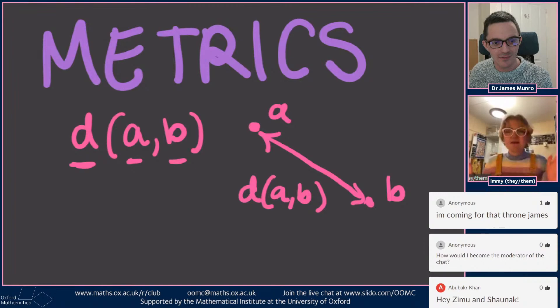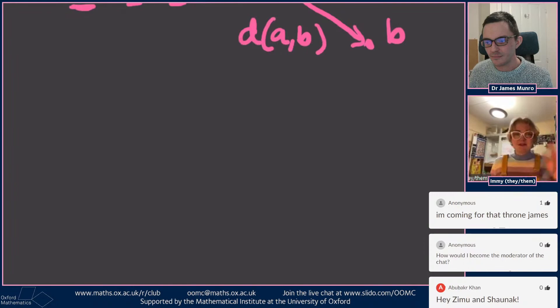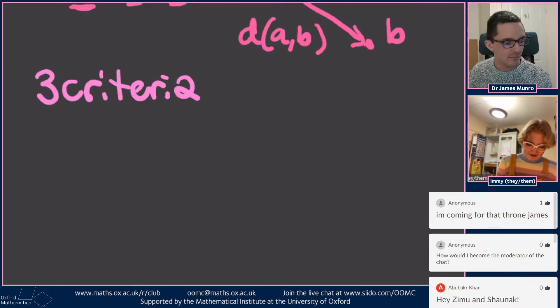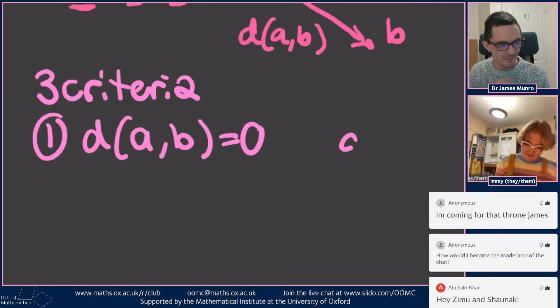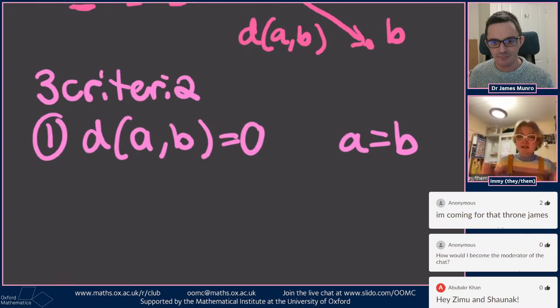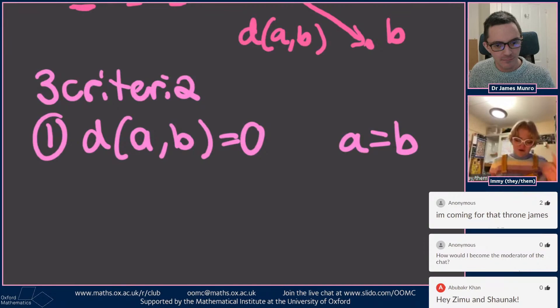We're going to see with this definition what weird, funky, strange stuff still fits our definition but doesn't feel like the distance we all know and love. We'll write distance as d(A,B), meaning the distance between A and B. So if I had a point A and a point B, the distance is written as d(AB). There will be three criteria for what counts as a distance.